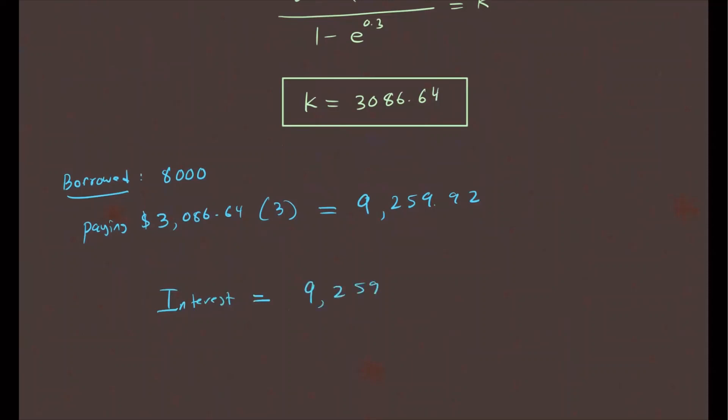The interest is going to be how much you're paying, that's $9,259.92, minus the $8,000 borrowed. So if you take this number and do the subtraction, you'll get $1,259.92 for interest. So this is how much the person will pay on interest. All right, I hope this makes sense. I will see you next time.